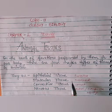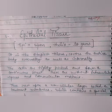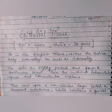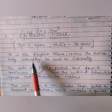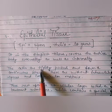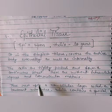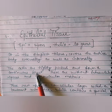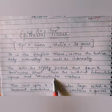In this video, we will discuss epithelial tissue only. The term 'epithelial' is made up of two words: 'epi' means upon, and 'thelia' means to grow. This tissue is the simplest tissue and covers the entire body of animals externally as well as internally. The cells of epithelial tissues are tightly packed and form a continuous sheet, as they cover the surface of the animal's body and organs. They do not have any intercellular spaces or any intercellular matrix.